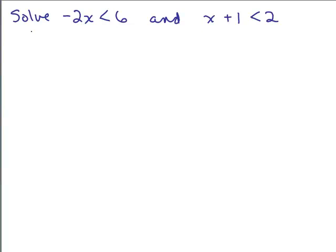Here's the next problem: solve negative 2x is less than 6 and x plus 1 is less than 2. Try this on your own using the same method — solve each separately, then graph to see where the overlap is, then write your answer in interval notation.